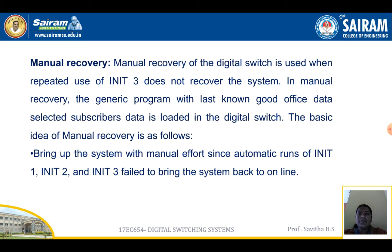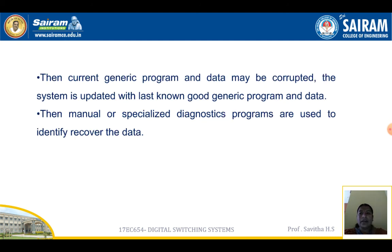Example: A DSS starts experiencing a slow dial tone even after INIT2 initialization; the technician may use INIT3, which solves the problem mainly caused by software corruption in the CP. Manual recovery of the digital switch is used when repeated use of INIT3 does not recover the system. In manual recovery, the last known good generic program and subscriber data are located in the digital switch. The system is brought up with manual effort since automatic runs of INIT1, INIT2, and INIT3 have failed. The current generic program and data may be corrupted, so the system is updated with the last known good generic program and data, then manual or specialized diagnostics programs are used to identify and recover the data.